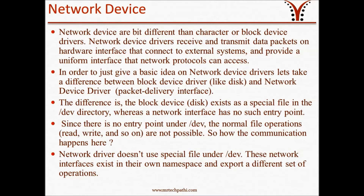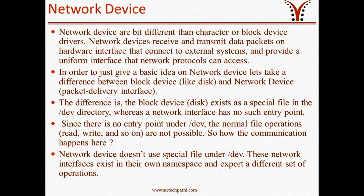Coming to network devices — network devices are a bit different from character or block devices. Network device drivers receive and transmit data packets on the hardware interface that connects to the external system, and provide a uniform interface that network protocols can access. A key difference is that a block device like a disk exists as a special file in the /dev directory, whereas a network interface has no such entry point. Since there is no entry point under /dev, normal file operations like read and write are not possible. Network device drivers do not use special files under /dev; instead, these network interfaces exist in their own namespace and export a different set of operations.